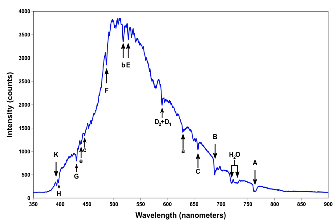Quasi-static pressure broadening: The presence of other particles shifts the energy levels in the emitting particle, thereby altering the frequency of the emitted radiation. The duration of the influence is much longer than the lifetime of the emission process. This effect depends on the density of the gas, but is rather insensitive to temperature. The form of the line profile is determined by the functional form of the perturbing force with respect to distance from the perturbing particle. There may also be a shift in the line center. The general expression for the line shape resulting from quasi-static pressure broadening is a four-parameter generalization of the Gaussian distribution known as a stable distribution.